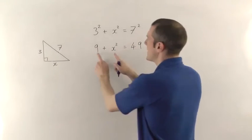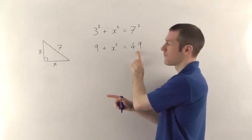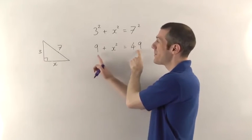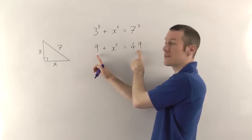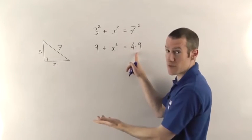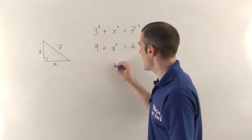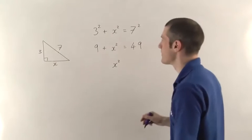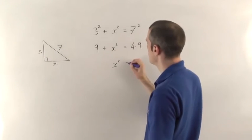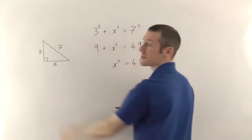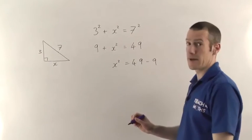Effectively, we're saying that when you add these two together, you get 49. So this one has got to be 49 minus the 9. It's got to be the difference, because the difference between them when you add it to 9 has got to add up to the 49. So x squared, the area of the square on this side that we still don't know yet, it's got to be the total area, the area of the big square, minus the one on this side. So it's going to be minus the 9.